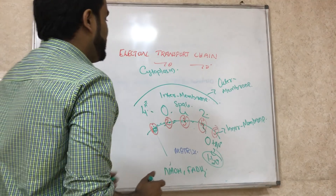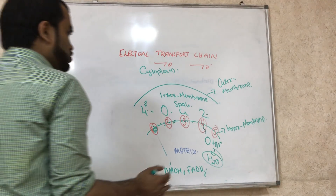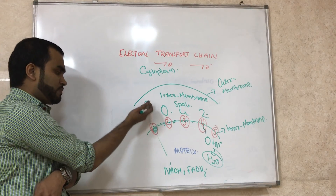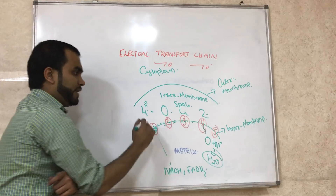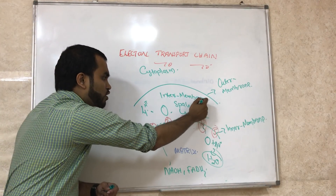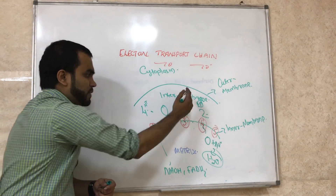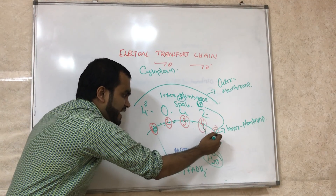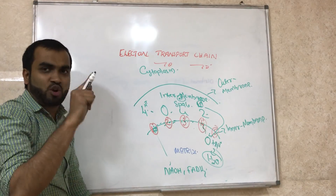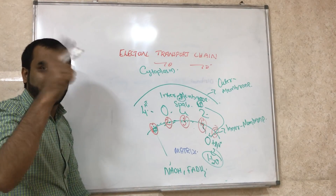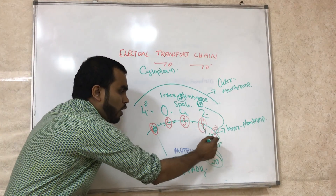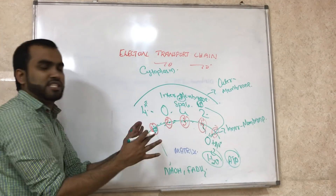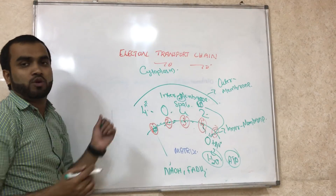In the intermembrane space, we have a high concentration of H+, and a low concentration in the matrix. The high H+ ions start coming through the fifth complex, which is the ATP synthase pump. It has F0 and F1 particles that work like a fan, pumping out ATP. This is how ATP is formed — this is the electron transport chain.